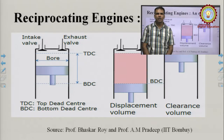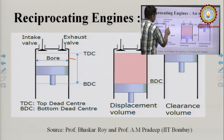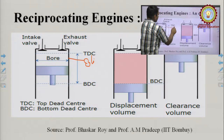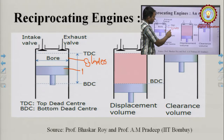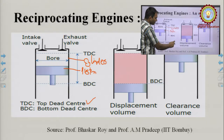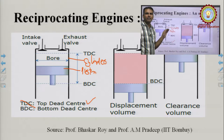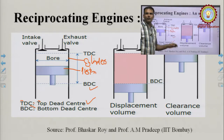In these diagrams you can see the cylinder and the piston, which reciprocates inside the cylinder from TDC to BDC or from BDC to TDC. TDC is the top dead center — the position of the piston at the topmost position — and BDC is the position of the piston at the bottommost position.